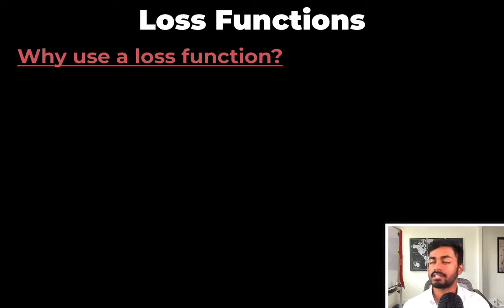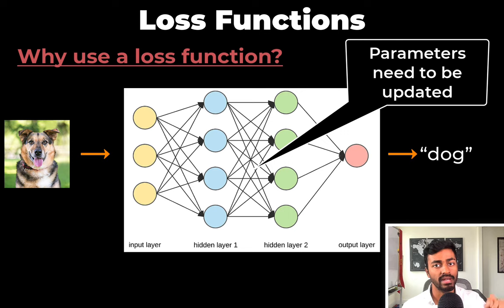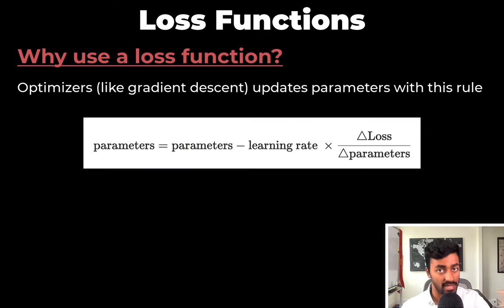In this pass we are going to explicitly answer the question: Why use a loss function? So from the previous pass we want to train a neural network to take an image and determine if it is a dog or not. To do so we need to update the weight parameters. To do this optimizers make use of equations that look like this.